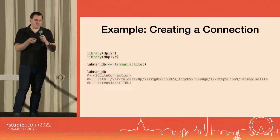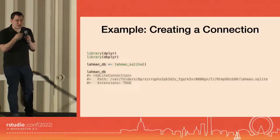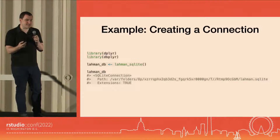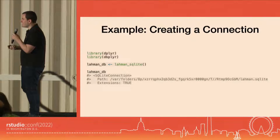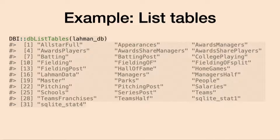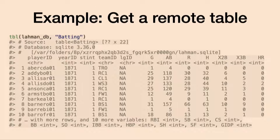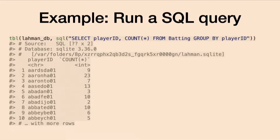I'll give an example of how we might work with a SQL connection. This is a database called Lahman, based on the Lahman baseball statistics dataset — a really phenomenal collection of tables that comes built into dbplyr. We've got this lahman_db object, it's a SQL connection. To list tables, we'd use the db_list_tables function from DBI, which gives us a vector of the tables in the database. If we wanted to work with a remote table as if it were a dbplyr table, we'd use the tbl function on this database and pass the table name — in the case of the Lahman data, maybe the batting statistics table. If I want to run a SQL query, I'd still use the tbl function but use the SQL function to construct that query, like counting the batting table grouped by player ID.